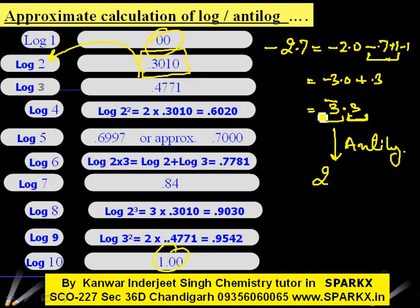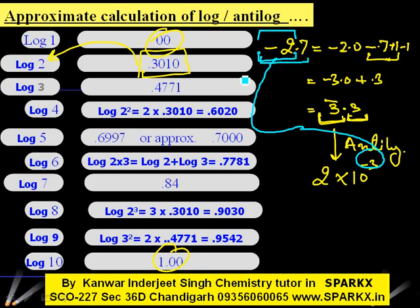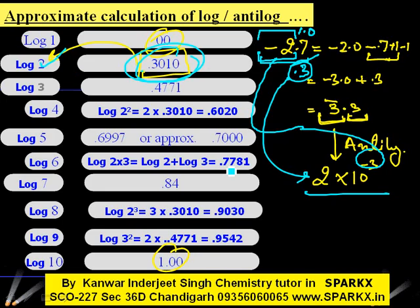So the antilog will be 2×10^(−3). As a shortcut: for −2.7, add 1 to the negative characteristic (making it −3) and subtract 1 from 0.7, leaving the mantissa as 0.3. Then look up the antilog of 0.3, which is 2, and the result is 2×10^(−3).